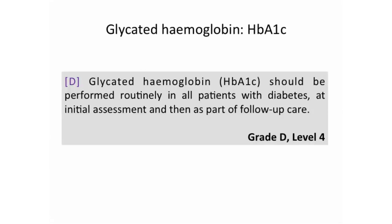HbA1c is a reflection of average glycemia over the past two to three months, making it a very valuable tool. We still feel HbA1c is the best glycemic marker we have, and recommend it be performed routinely in all patients with diabetes at initial assessment and as part of follow-up. When I say initial assessment, this is not meant as a diagnostic tool — it's a baseline before initiating pharmacotherapy, so you can follow up and assess HbA1c improvement.